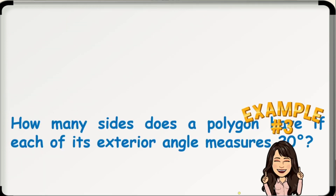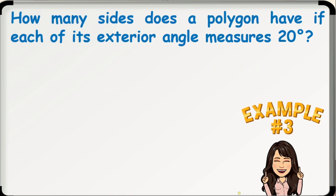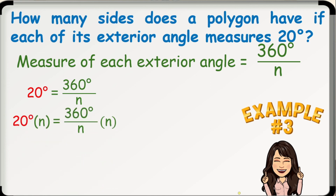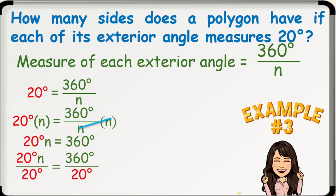Example number 3: How many sides does a polygon have if each of its exterior angles measures 20 degrees? Recall that the exterior angle of a regular polygon measures 360 degrees divided by N. Substituting 20 degrees in place of the measure of each exterior angle, we have 20 degrees equals 360 degrees divided by N. Multiplying both sides by N: 20N equals 360 degrees. Dividing both sides by 20 degrees, N equals 360 divided by 20, which equals 18. Thus, a polygon is an 18-gon if one of its exterior angles measures 20 degrees.